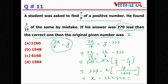Calculating: 11 × 144 = 1584. So the original number is 1584, and the answer is option D.